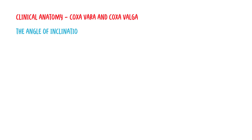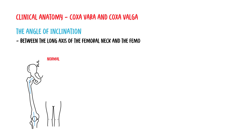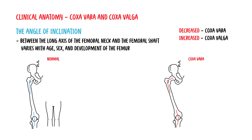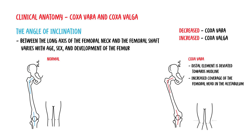The angle of inclination between the long axis of the femoral neck and the femoral shaft varies with age, sex, and development. When the angle of inclination is decreased, the condition is coxa vara; when it is increased, it is known as coxa valga. Vara describes a bone or joint where the distal element deviates toward the midline — in coxa vara there is increased joint stability due to increased coverage of the femoral head in the acetabulum, and people tend to have knocked knees.